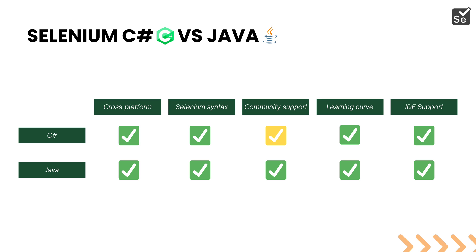Let's look at the major benefits of C-sharp versus Java language binding in Selenium. C-sharp is cross-platform supported, much like Java. The Selenium syntax is also pretty much exactly the same for both C-sharp and Java — there are not quite a lot of differences. When it comes to community support, Java has a higher community presence compared to .NET, and there are fewer resources available for C-sharp. However, the learning curve is the same, and IDE support for both C-sharp and Java is widely available among the community.